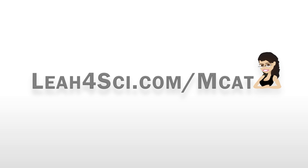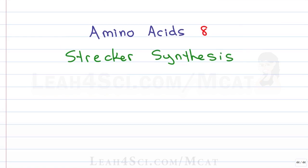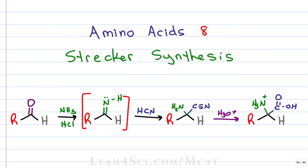Strecker synthesis is one of the first methods known to synthesize amino acids, named for the scientist who discovered it, Strecker. We'll look at a quick overview for the reaction, break down the intermediates, and then go through the step-by-step mechanism.